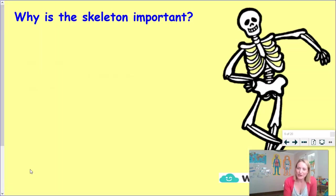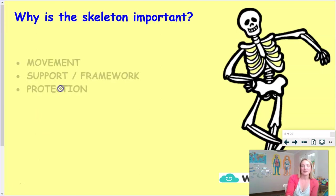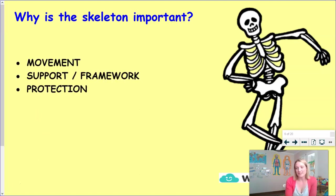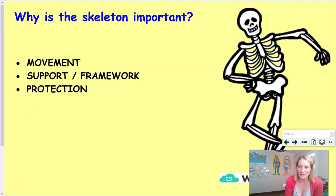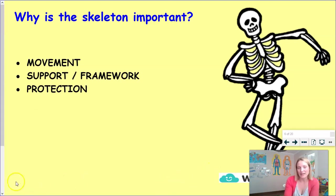So now we move on to why the skeleton is important to vertebrates. There are three functions of a vertebrate skeleton. Very simply put: without the skeleton we would not be able to move, it supports and gives a framework for our bodies, and it protects us. We're going to go through each of these points with examples from the human body that we will cover in more detail in tomorrow's lesson.